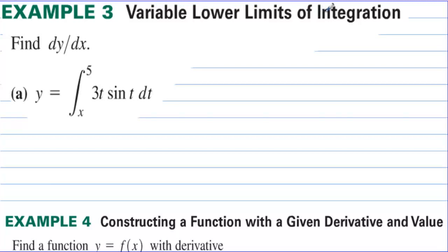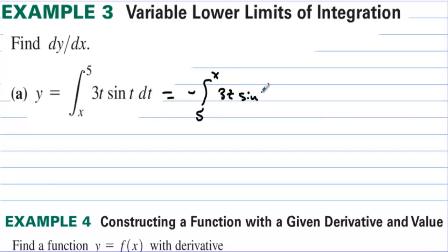Variable lower limits of integration — find dy/dx. What if the x is down here? If we did the integral, we'd have the constant minus the variable. Then when we take the derivative, it's just going to be a negative of the variable. In other words, we could say this is equal to the negative of the integral from 5 to x of 3t sine t dt. And then the derivative of the integral would just be negative 3x sine of x.